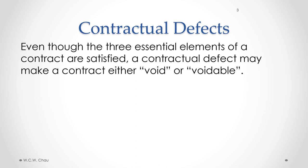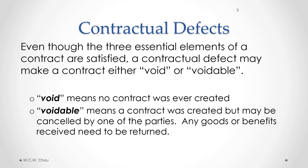A contractual defect may make a contract either void or voidable. When we say a contract is void, it means that because of that defect no contract was ever created. There are certain defects which cause a contract to be voidable, which means a contract is valid and was created but may be cancelled at the option of one of the parties. When the contract is cancelled, any goods or benefits received would need to be returned.